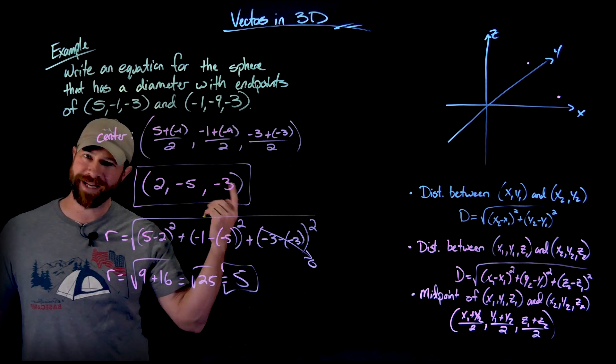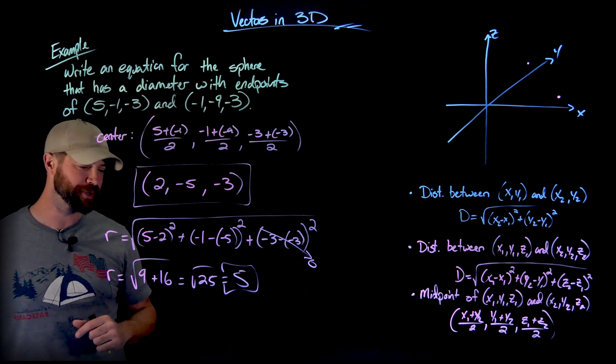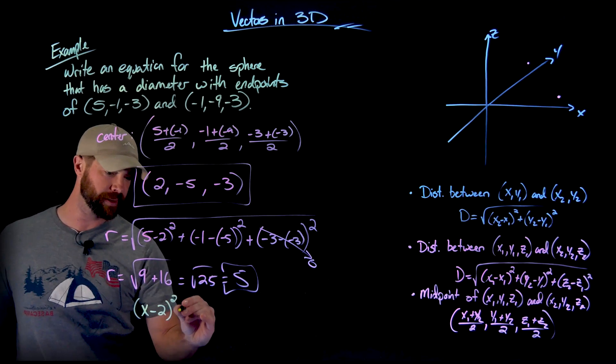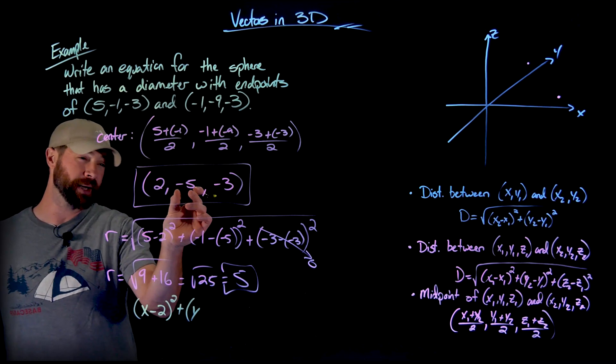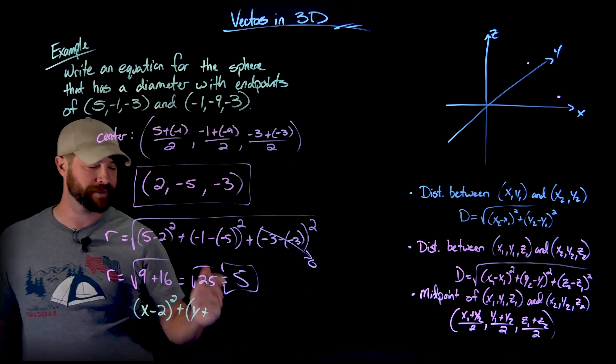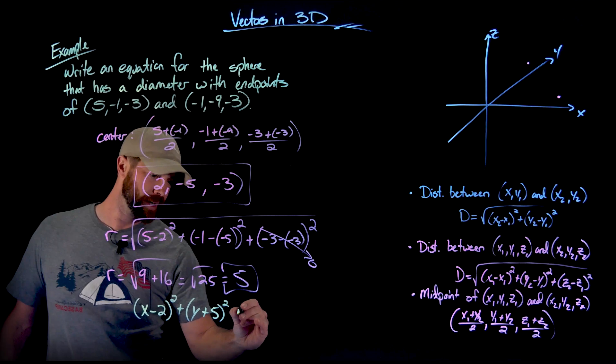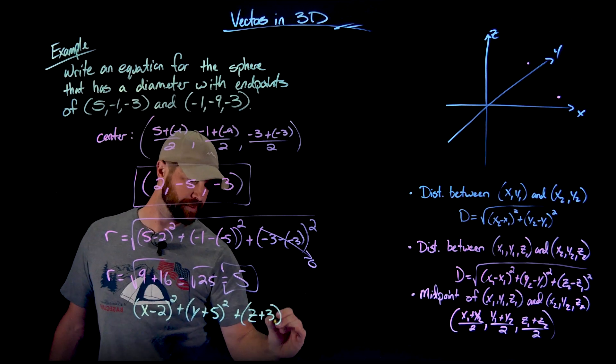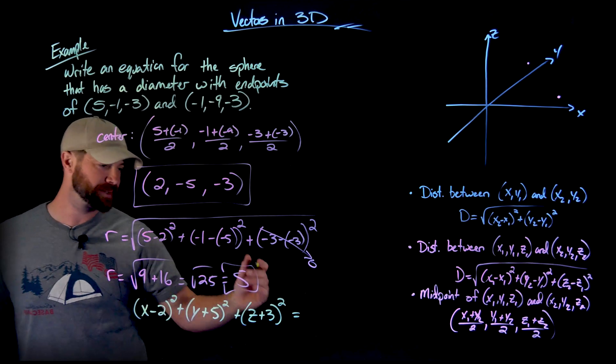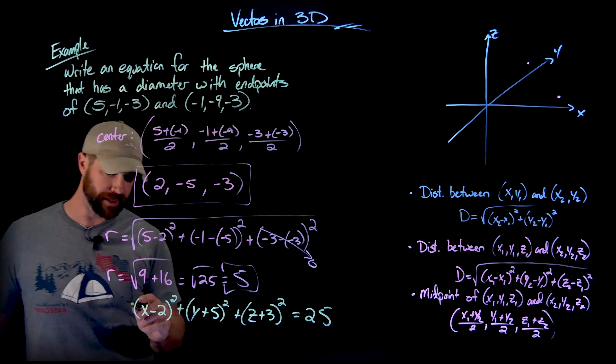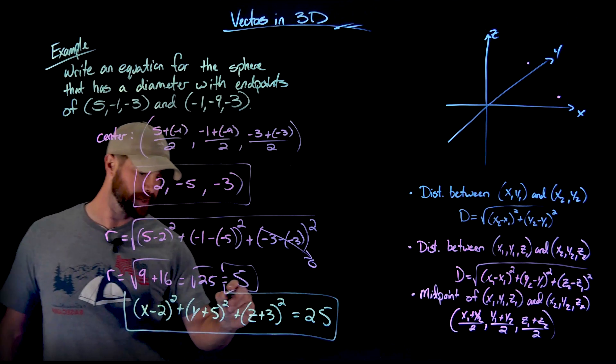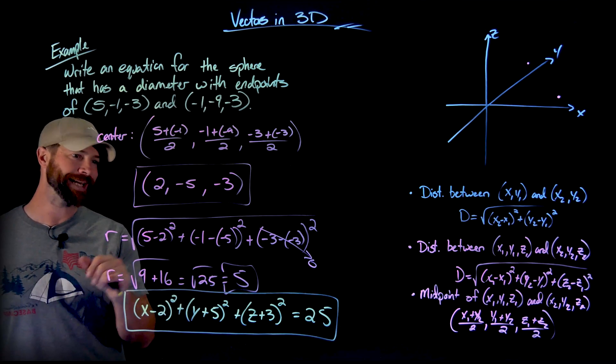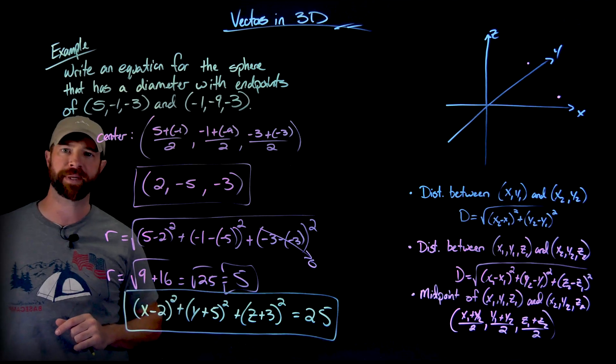And now that I have my center and my radius, creating the equation for my sphere is pretty easy. It's simply X minus the X coordinate of my center right here squared, plus Y minus the Y coordinate. But in this case, that would be going subtract negative 5 or plus 5 squared plus Z minus the Z coordinate, which would end up being a plus 3 squared, equals my radius squared of 25. So this is the equation of the sphere described above that I know now has a radius of 5 and a center of 2, comma negative 5, comma negative 3.